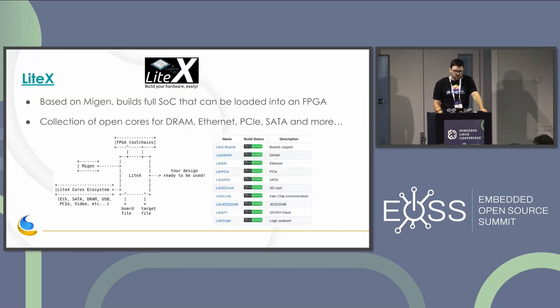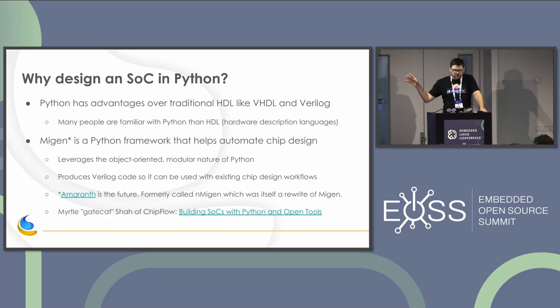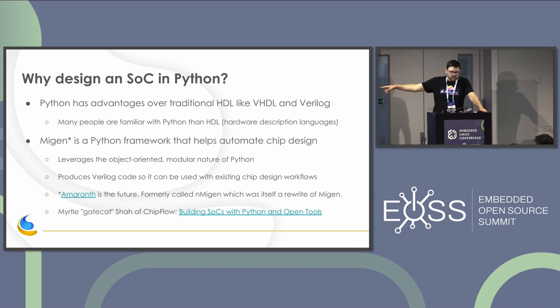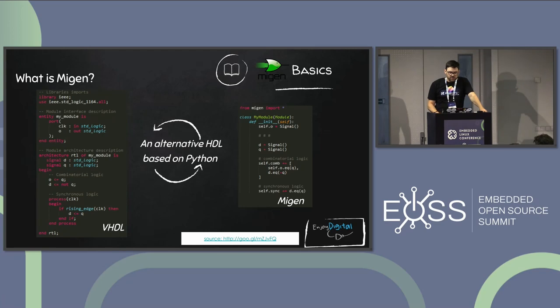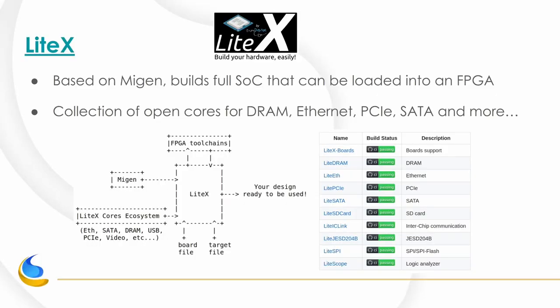Python is becoming a popular language for hardware descriptions — instead of Verilog or VHDL, you can now use Python. There was a project called Migen, now replaced by a project called Amaranth, for doing your HDL in Python. The way I was able to run Linux on FPGA on the ECP5 from Lattice using an open source flow was with LiteX — a framework built on that Python language that allows you to pull together all the components you need to make an SOC for an FPGA.